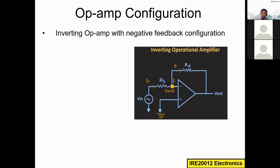Usually we use a symbol like this for the ground. Now, I1 is the input current flowing through R1, and If is the feedback current flowing through the feedback resistor Rf. This is the node — the node means the meeting point of more than one branch. Here these two branches are meeting, so this is called node Vx.